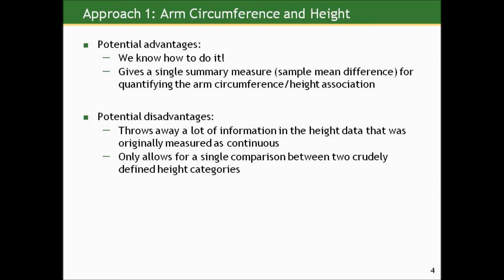What are the potential advantages of this approach? We know how to do it — we know how to compare a mean between two groups, quantify the difference, and account for uncertainty with a confidence interval. This gives a single summary measure for quantifying the arm circumference–height association. The potential disadvantage, however, is that it throws away a lot of information in the height data that was originally measured as continuous. We arbitrarily dichotomized at the median, throwing away the richness of variation on the continuum, and only allow a single comparison between two crudely defined height groups.